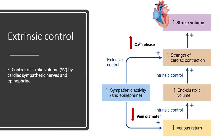There is also extrinsic control over venous return: sympathetic activity decreases vein diameter, so smaller veins squeeze more blood back to the heart, increasing venous return, which leads to greater filling, greater contraction strength via Starling's Law, and increased stroke volume.